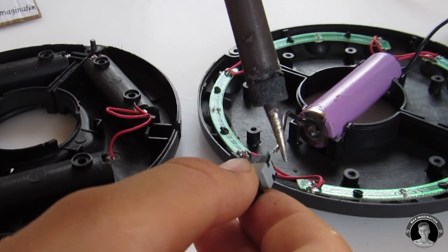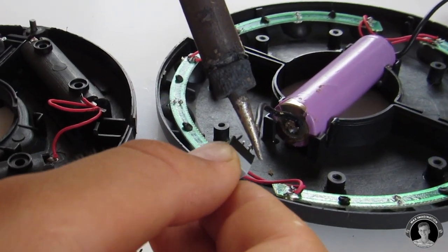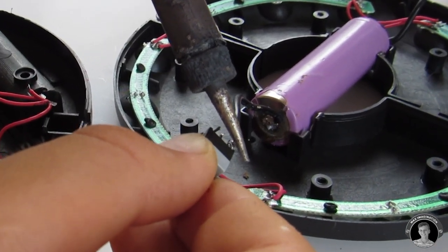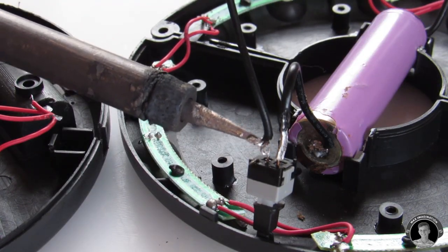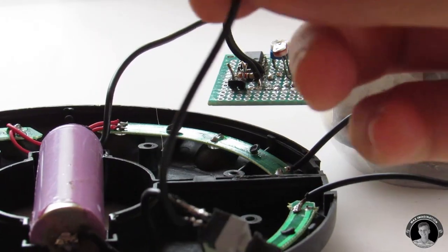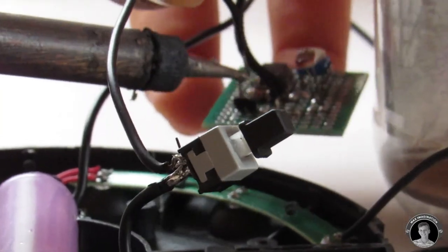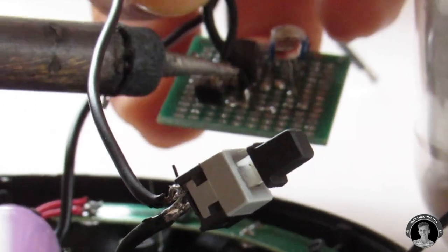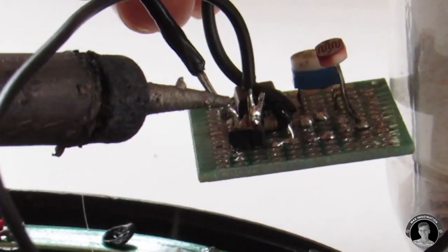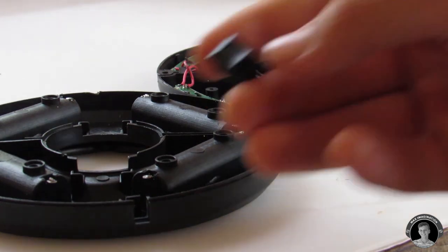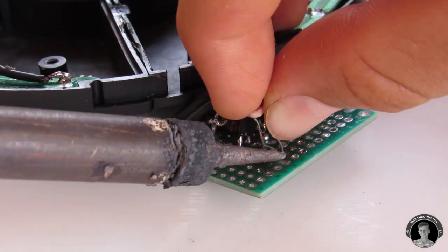I'll attach the negative wire coming from the battery to one end of this push switch, and then the other wire that comes from the switch will go to the negative terminal of the circuit. Solder the positive end of the battery to the positive terminal of the circuit. The button switch seemed to stop working so I replaced it with a regular rocker switch.